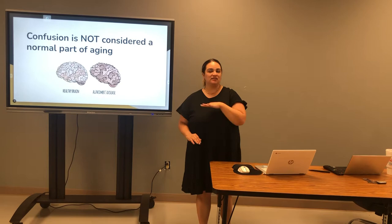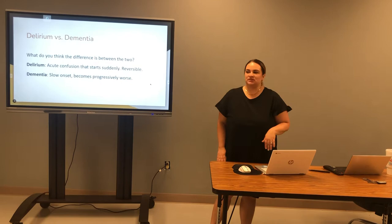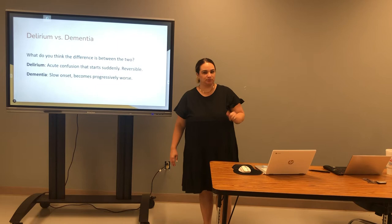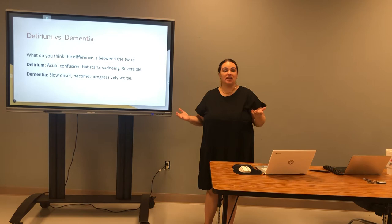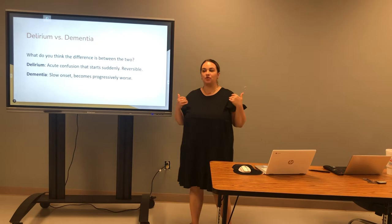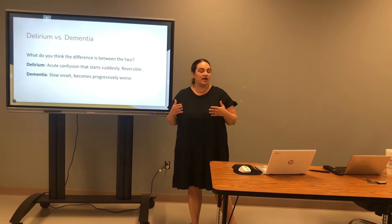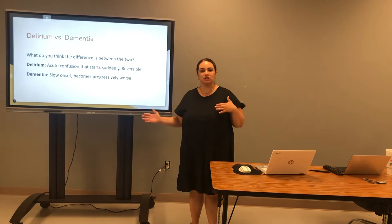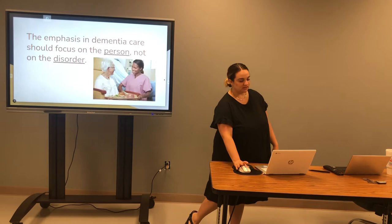Delirium versus dementia — delirium is acute and can come on suddenly, and hopefully it's reversible. You figure out the culprit that caused the acute confusion and remedy it. Dementia, on the other hand, has a slow onset and becomes progressively worse as the person works through the four stages of confusion.